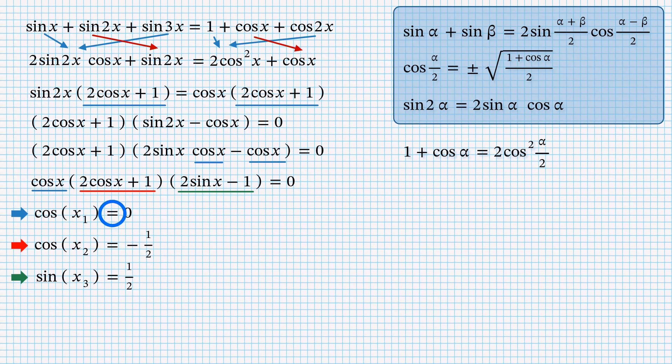For the first equation, the answer is just pi over 2 plus pi k. To solve the second equation, we need arc cosine of negative half. We know that arc cosine of positive half is pi over 3. Therefore, arc cosine of negative half is pi minus pi over 3 or 2 thirds of pi. And we write the answer straight according to the textbook, plus minus 2 thirds of pi plus 2 pi k.